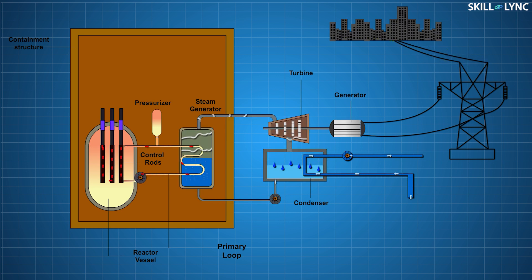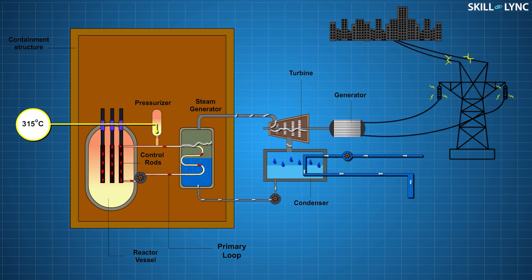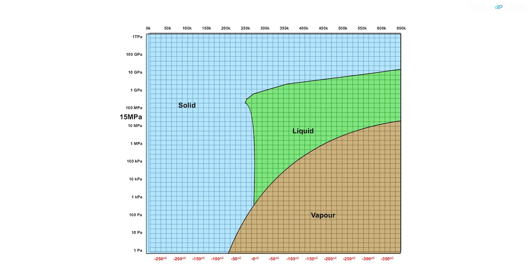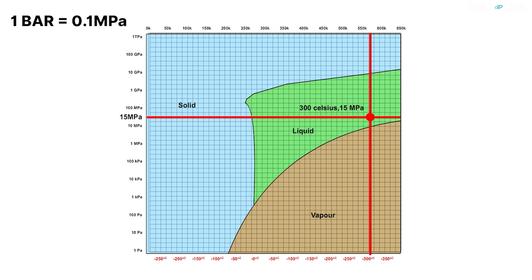In the primary coolant loop, demineralized water is used as a coolant. The temperature of water while entering the reactor core is around 275 degrees Celsius and increases to 315 degrees Celsius as the water is heated. Despite having high temperatures, water in the loop remains in the liquid state, because the pressure in the loop is usually around 155 bar, which corresponds to the liquid phase in the phase diagram shown.